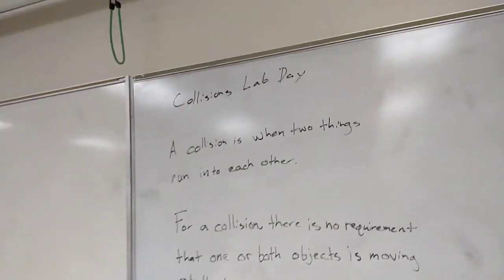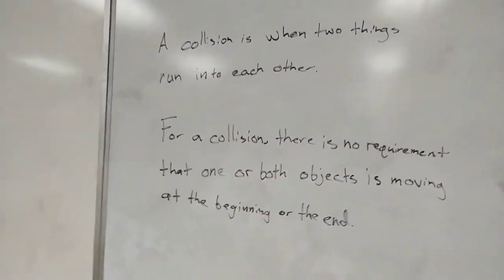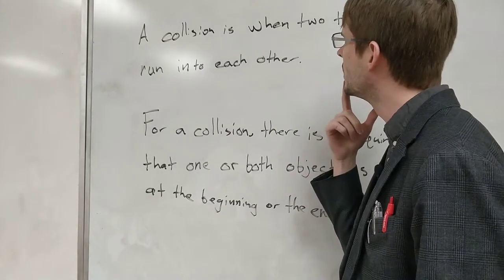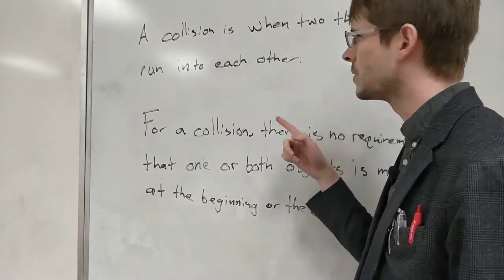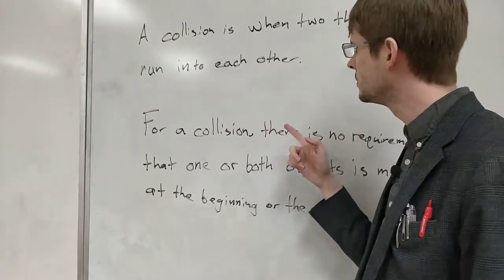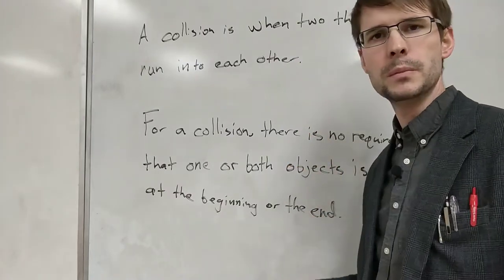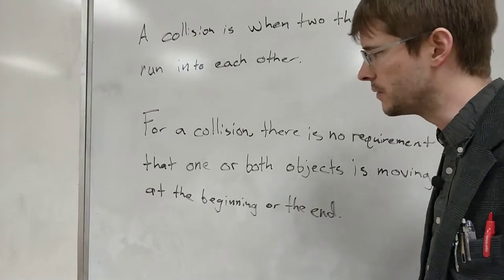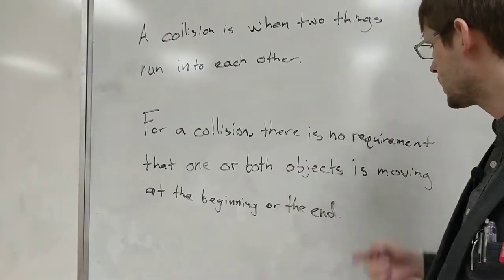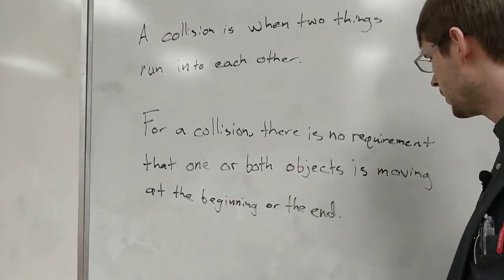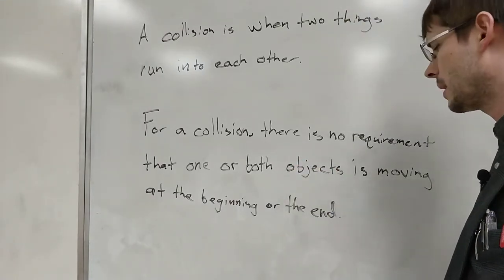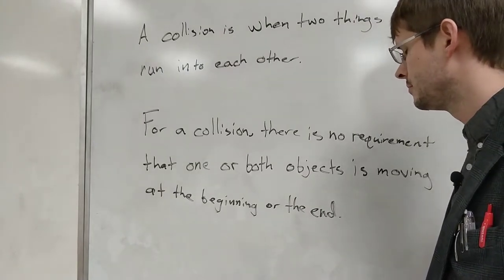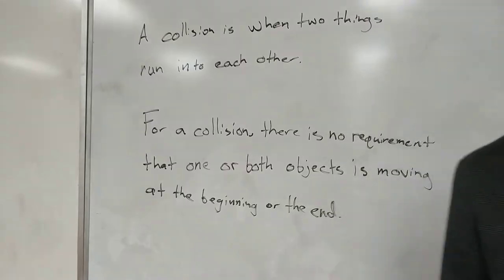Okay, collisions lab day. It says here a collision is when two things run into each other — seems like a pretty simple definition. I bet we'll come up with a more sophisticated definition with some more specific stuff later. It also says for a collision there's no requirement that one or both objects is moving at the beginning or at the end — that's an interesting requirement.